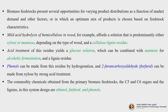One well-known example is dextrose or D-glucose from the hydrolysis of starch or cellulose, high fructose corn syrup from the enzymatic isomerization of dextrose, and hydrolysate and xylose from the hydrolysis of hemicelluloses — these are commodity products. Mild acid hydrolysis of hemicellulose in wood offers a solution that is predominantly either xylose or mannose depending on the type of wood, along with a cellulose-lignin residue.